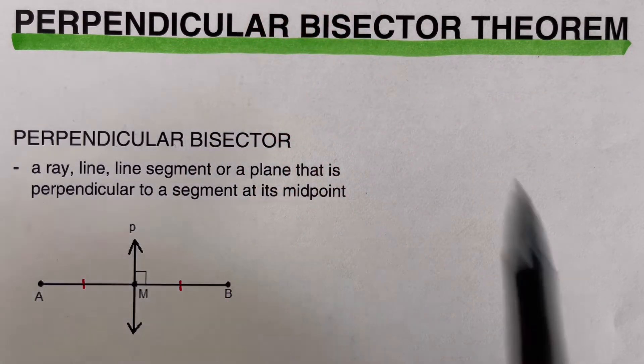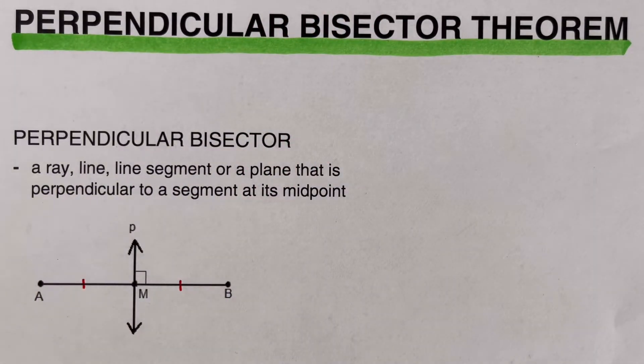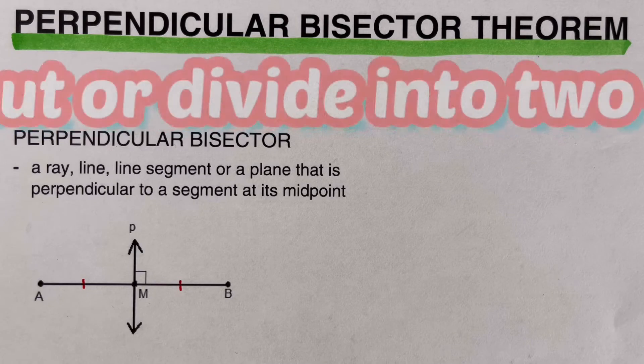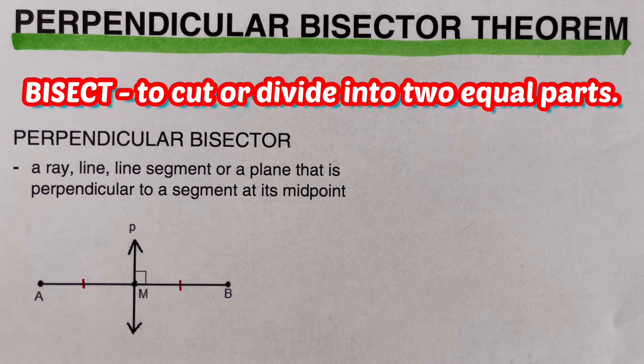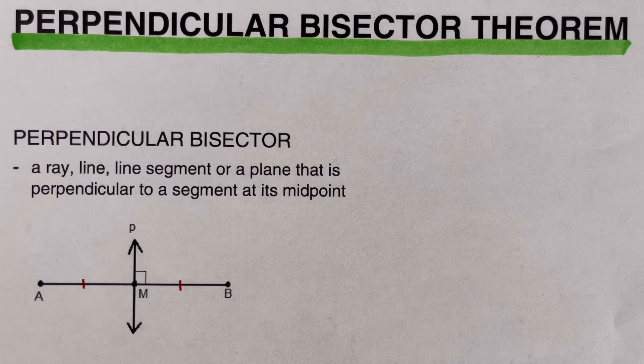If we say Bisector, it comes from the root word bisect, which means to cut or divide into two equal parts.